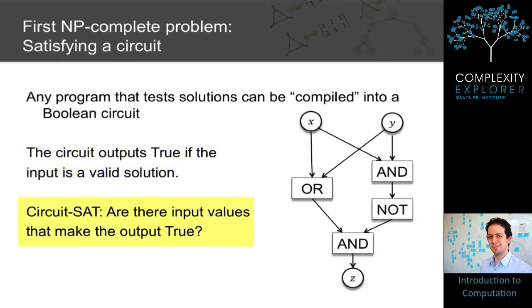The circuit-sat problem, circuit-satisfiability, is the question of, given a Boolean circuit, are there input values that make the output true? And so we see that circuit-sat is NP-complete.